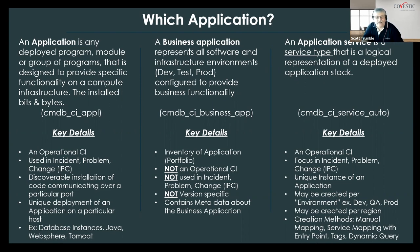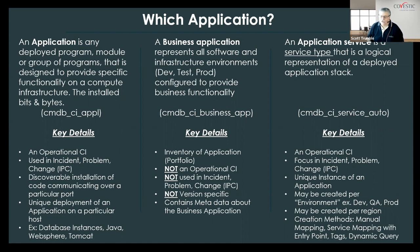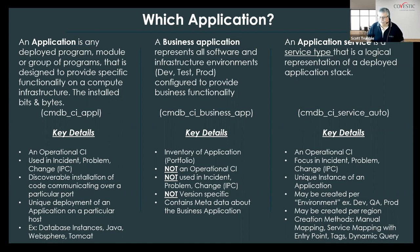When talking about CSDM and building models, an application is that discoverable deployed item. Versus the business application, which represents all of our infrastructure environments — all the things that provide a functionality. The business application is more for planning groups, not necessarily operational CIs. They're not used in incident, problem, change — they're used for planning, and contain metadata around applications: how do they tie together, what business services leverage them? And then the third one, where the rubber meets the road, is the application service, where we tie those things together. That's where business service mapping really shows up and where we see those maps on the page.